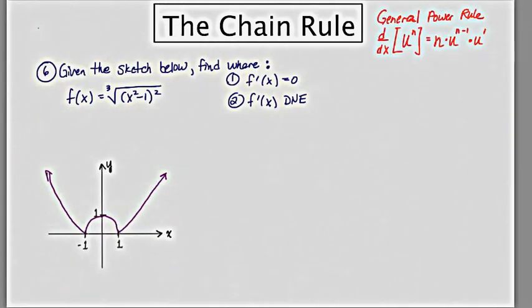So this next example has us go beyond just finding a derivative, but it has us answer the question, where is the derivative equal to 0, and where does the derivative not exist?